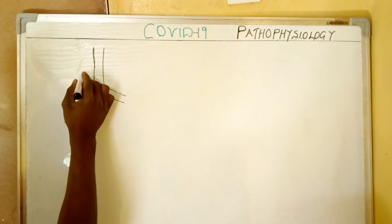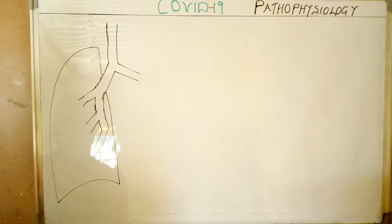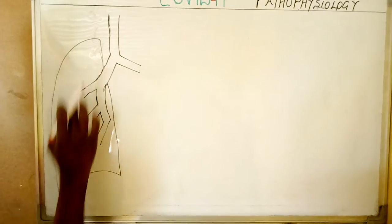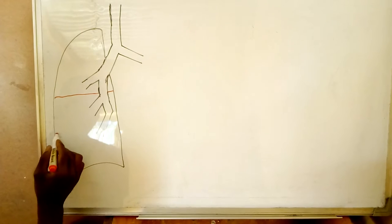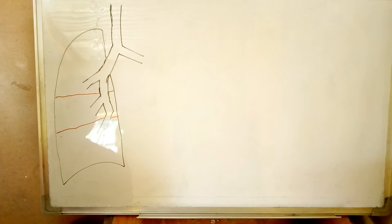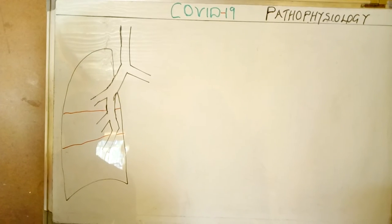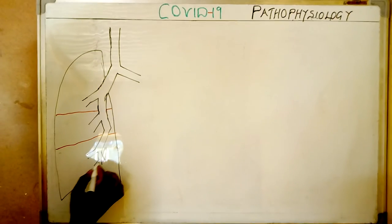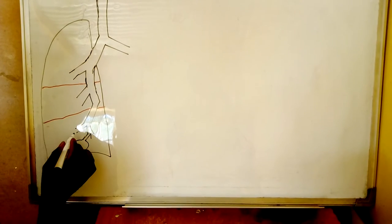So this is the lung tissue. We said that the right lung actually has three lobes. We have the upper lobe, the middle lobe, as well as the lower lobe. In all these lobes, the lobar bronchi are going to divide into small bronchi, then give way to the air sac, which we are calling as the alveoli.